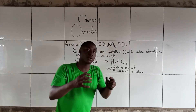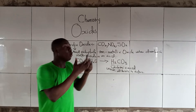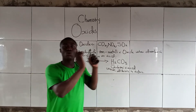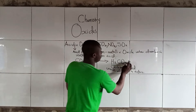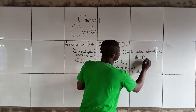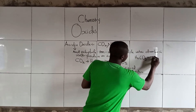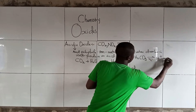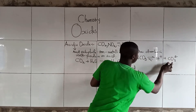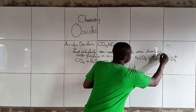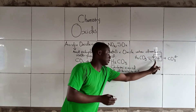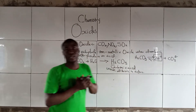Basicity refers to the number of replaceable hydrogen atoms in one mole of an acid. Ionizing H2CO3 gives us H⁺ + CO3²⁻. This is a radical. Balancing it, we get two, so the basicity is two — dibasic.